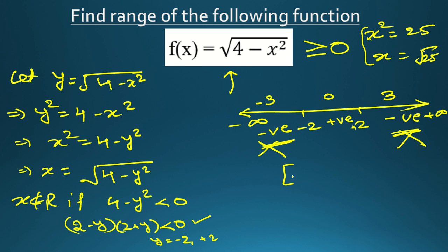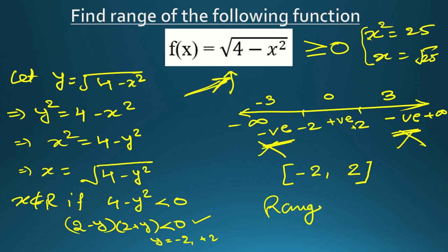So y is defined from −2 to +2. But there is a twist: this does not mean the range is [−2, 2]. Because y is the value of f(x), and you can see f(x) cannot be negative. So the range will be [0, 2]. We cannot consider −2 to 0. Like this you can analyze the function and find the range easily.